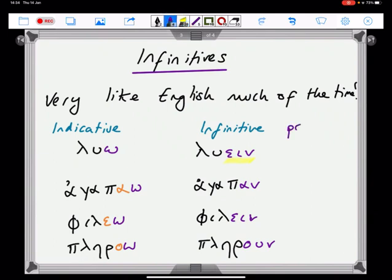Present active. But there are a couple of variations on a theme. Noticeably, the ἀγαπᾶν and πληροῦν, where that iota is no longer evident. So it's quite easy to spot λύειν, φιλεῖν, because it's epsilon, iota, nu. That's a pretty distinctive set of letters.